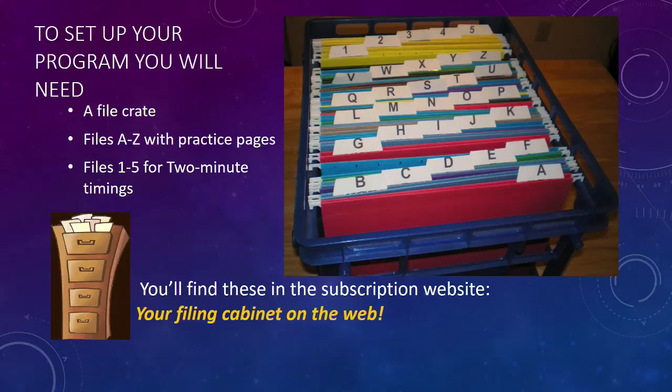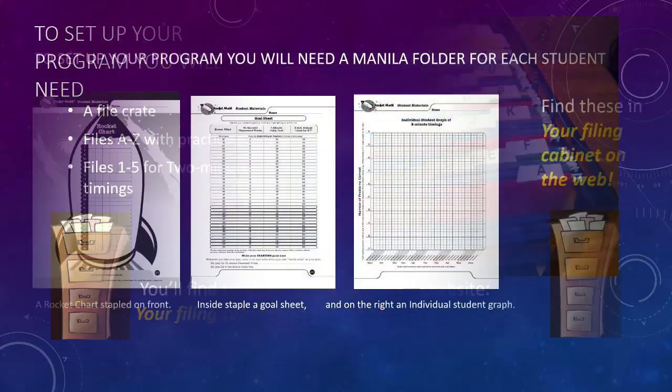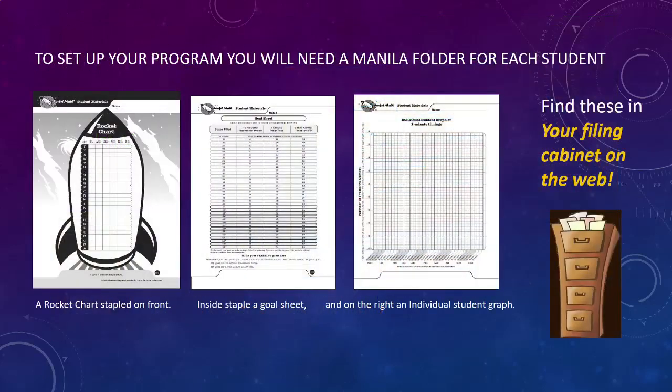For the next step in setting up your program, you will need to make a folder for each student. You will add pages from the subscription site, which are organized for you in your filing cabinet on the web. You'll find these in the forms and information drawer in the folder named forms for every student. Staple a rocket chart on the front of each student's folder. Inside, staple a goal sheet on the left and on the right, an individual student graph. Now you have your student folders.